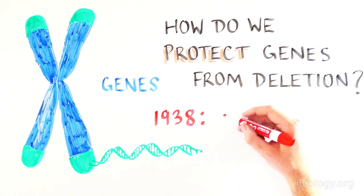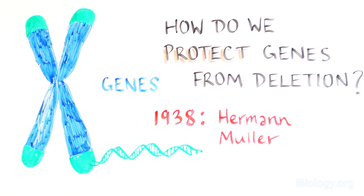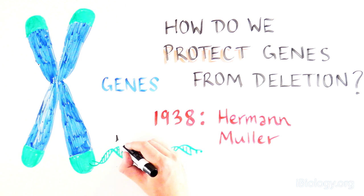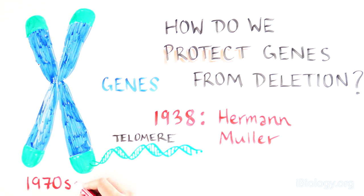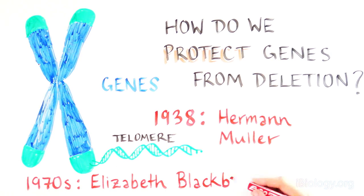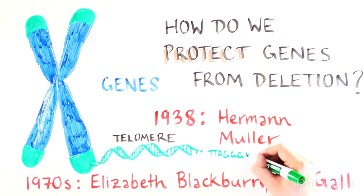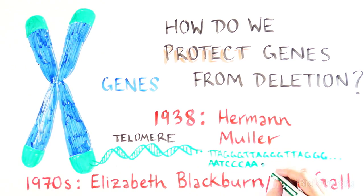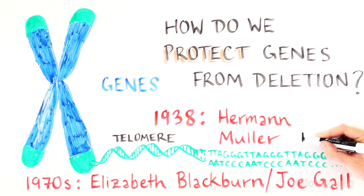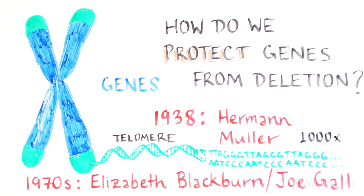In 1938, Herman Muller observed that the ends of linear chromosomes had unique properties and called this region the telomere. In the 1970s, Elizabeth Blackburn and Joseph Gall discovered that all telomeres consisted of a very specific DNA sequence made up of thousands of repeats of the same nucleotides, TTA-GGG, in yeast, mammals, etc.